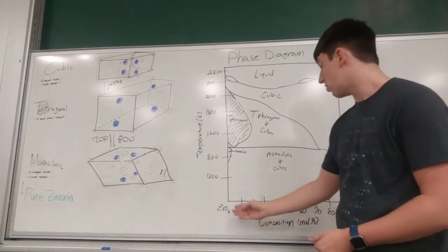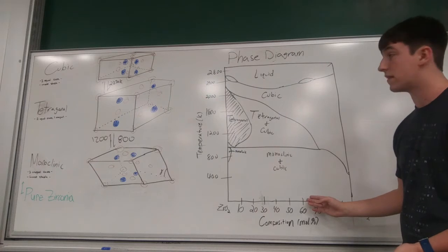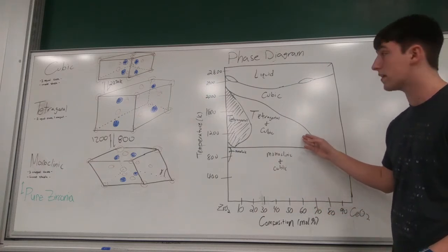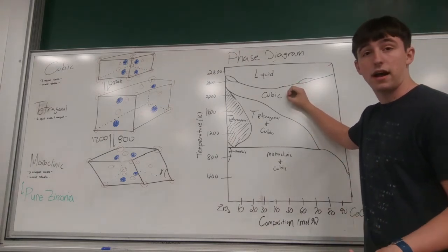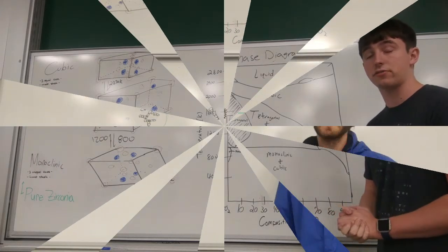In order to counteract this, we would increase the concentration of cerium in the system. This allows us to move through a mostly cubic system and end up in a cubic region at higher operating temperatures without having to worry about the volume change of the tetragonal region.